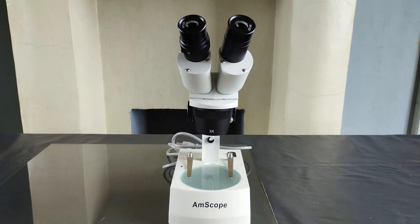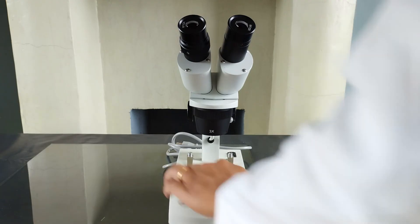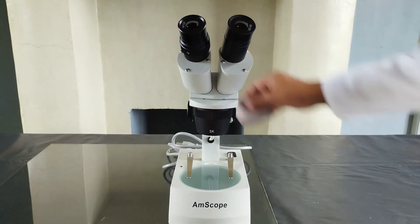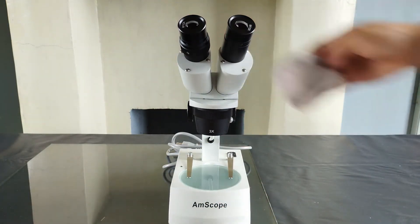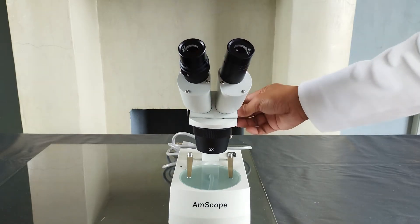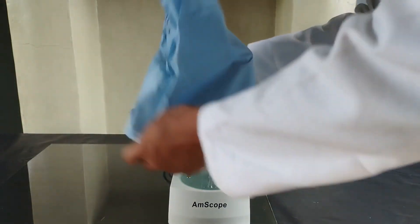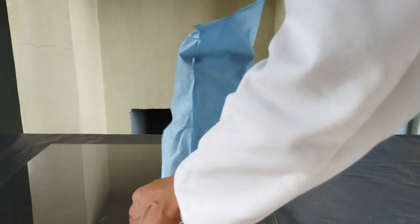When you're done using the microscope, remove the specimen from the stage, clean the eyepieces, the stage, and the body of the microscope using a clean lens cloth or paper. Lower the body tube of the microscope to its maximum by turning the adjustment screw. Finally, either cover the microscope with its cover or return it back to its designated box.